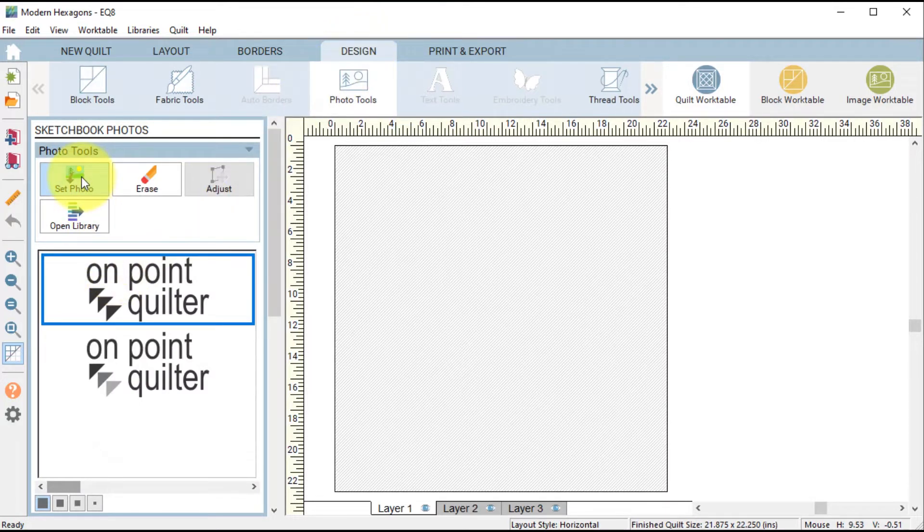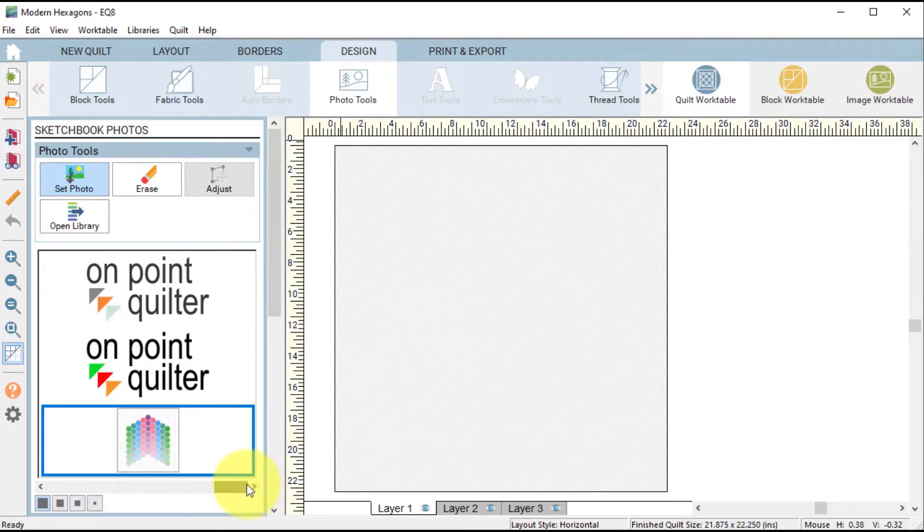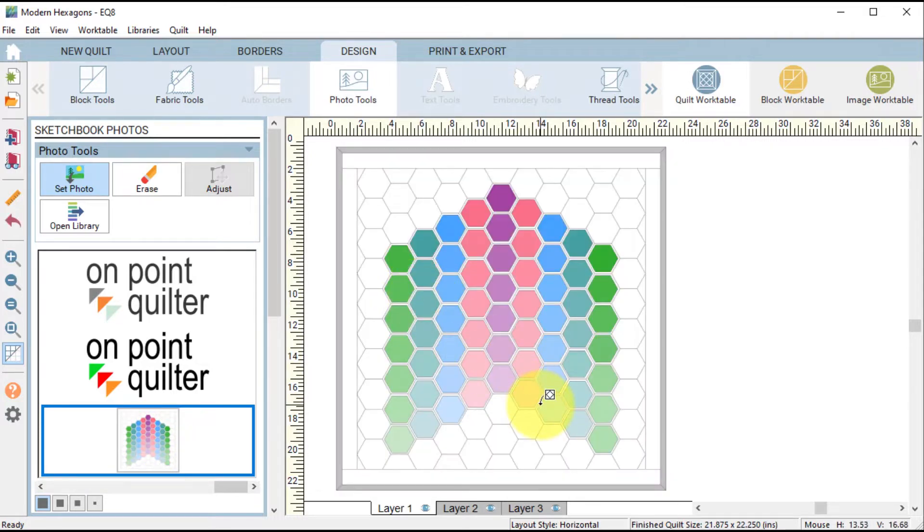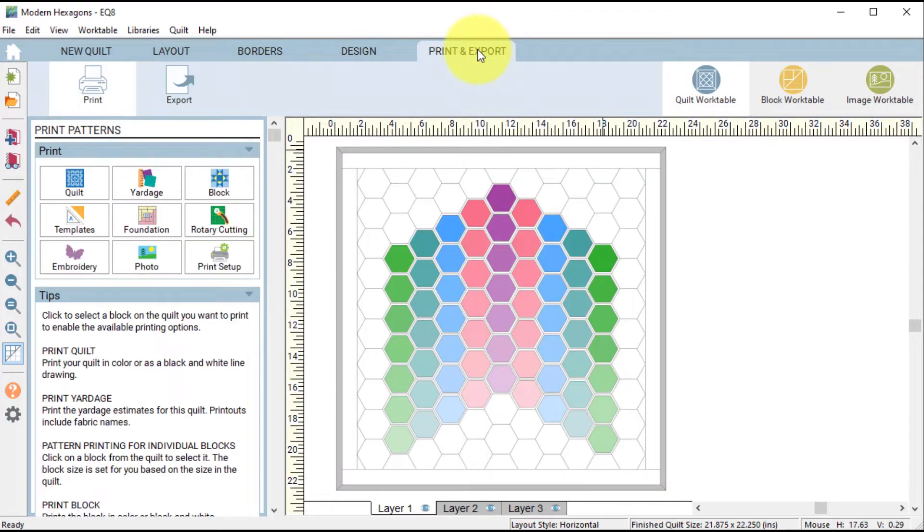Then go to the Design tab, select Photo Tools at the top, and select Set Photo. Scroll and find the photo that we just saved, and click on the quilt. Select Print and Export, click on the block, which is actually the photo of the full quilt, and select Photo.